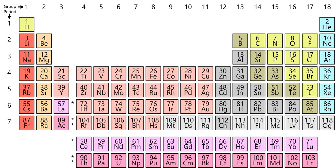Seventeen elements are generally classified as nonmetals. Most are gases: hydrogen, helium, nitrogen, oxygen, fluorine, neon, chlorine, argon, krypton, xenon and radon. One is a liquid, bromine, and a few are solids: carbon, phosphorus, sulfur, selenium, and iodine.